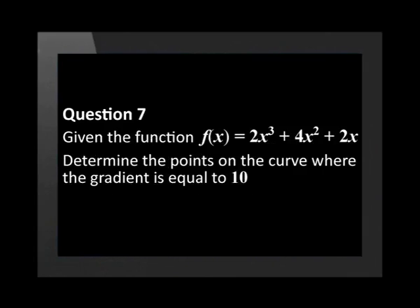Given the function f of x equal to 2x cubed plus 4x squared plus 2x, determine the points on the curve where the gradient is equal to 10.